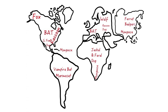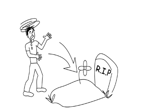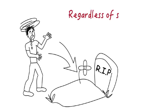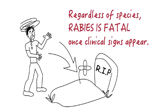Rodents and lagomorphs rarely constitute a risk of exposure to rabies virus. Regardless of species, the disease is fatal once clinical signs appear. During the prodromal period, which can last up to three days, animals show only vague clinical signs. The disease progresses rapidly after the onset of paralysis, and death is virtually certain a few days thereafter. Some animals may die rapidly without obvious clinical signs.